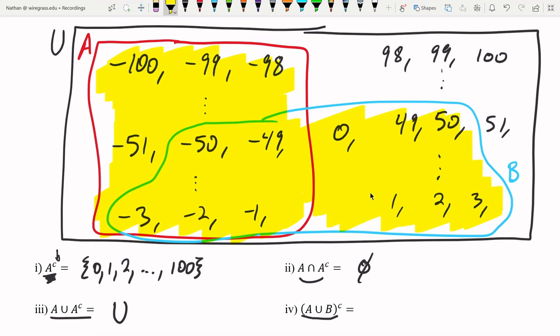So this yellow stuff is A union B. And all we have to find now is the complement of this set. Well, the complement is everything not in this set, which means it has to be all of this remaining stuff.